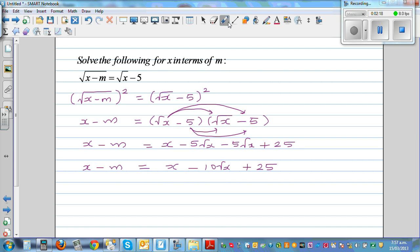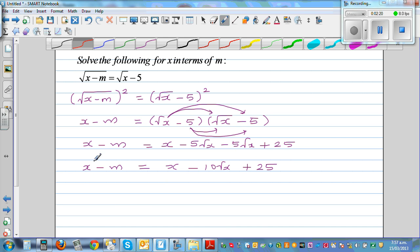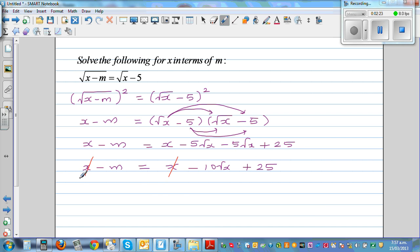What can we cancel from both sides? You got x on the left-hand side and x on the right-hand side. Taking away x from both sides, so x gets cancelled.